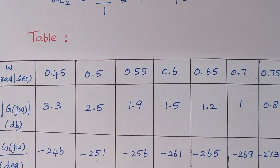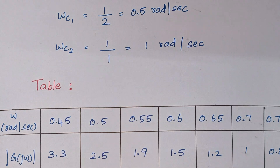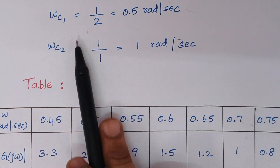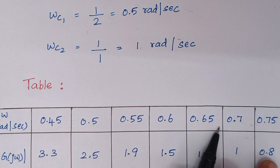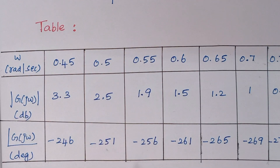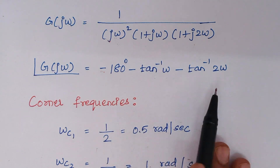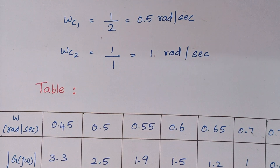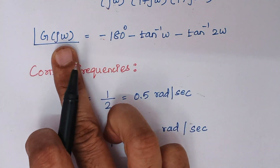Now we are going to frame a table. This table should contain your corner frequencies and the terms between the corner frequencies, as well as terms less than your corner frequencies. The more frequency values you take, the more accurate the polar plot. The corner frequency values are 0.5 and 1. I have included values at 0.5 and 1, a range of values in between, and also a value lesser than the corner frequency. Using the two expressions derived, we calculate magnitude and phase angle for each ω value.